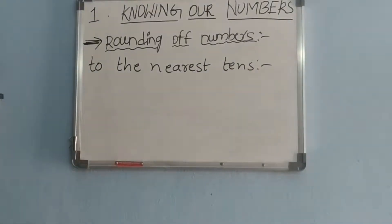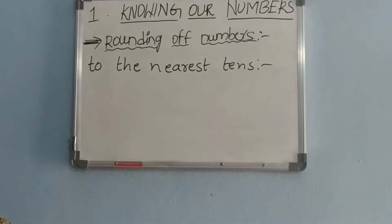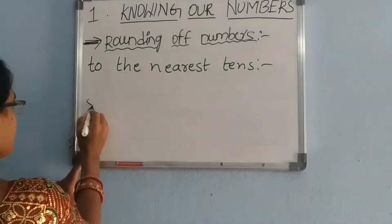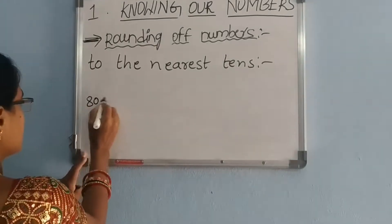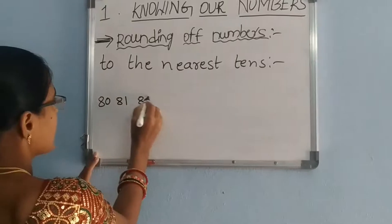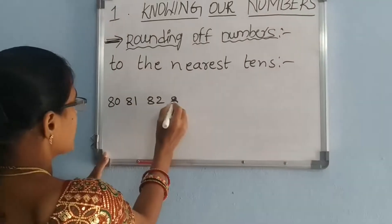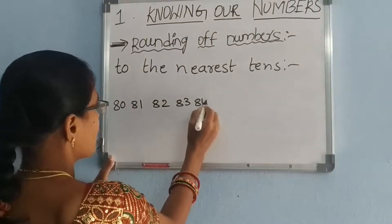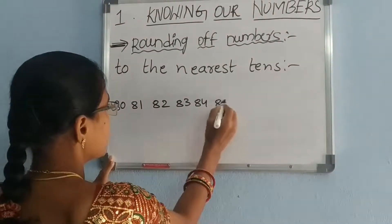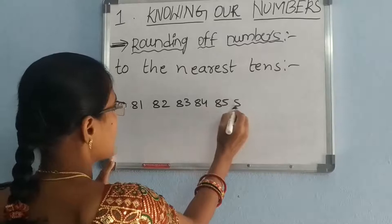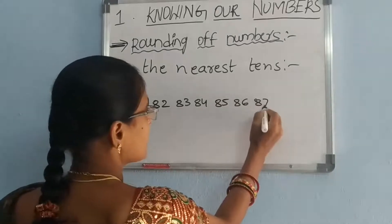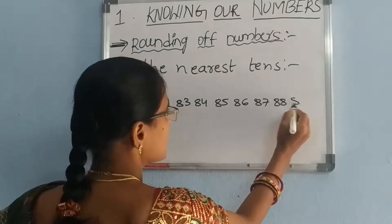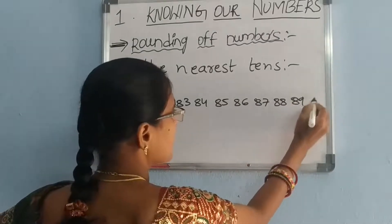Now we should write numbers from 80 to 90: 80, 81, 82, 83, 84, 85, 86, 87, 88, 89, 90.